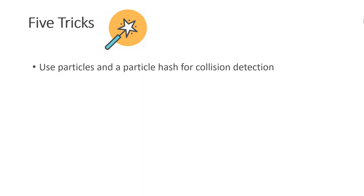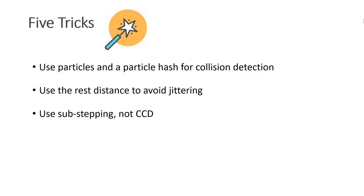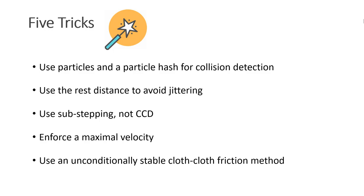The first is to use particles and a particle hash for collision detection. The second is to use the rest distance between the particles to avoid jittering. Use substepping instead of continuous collision detection. Enforce a maximal velocity. And use an unconditionally stable cloth-cloth friction method.